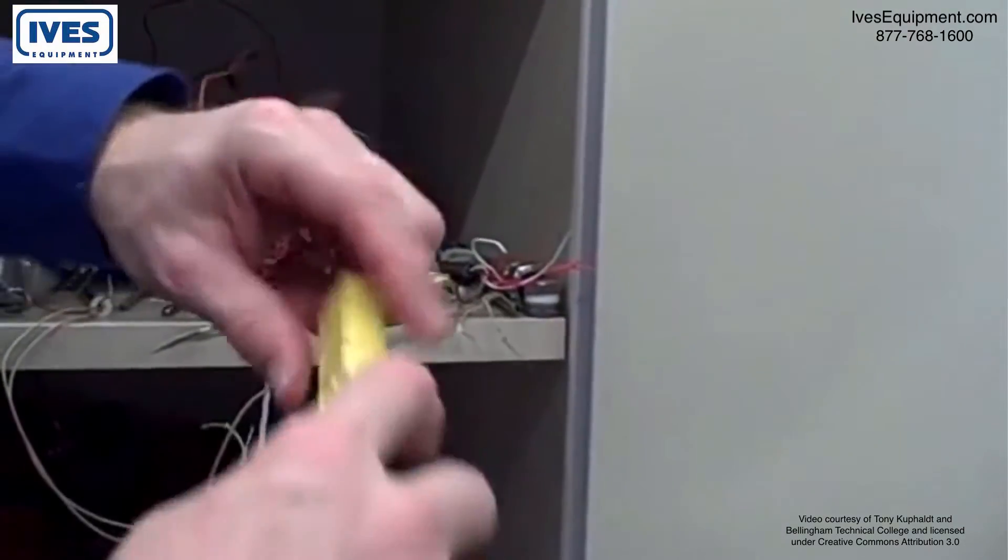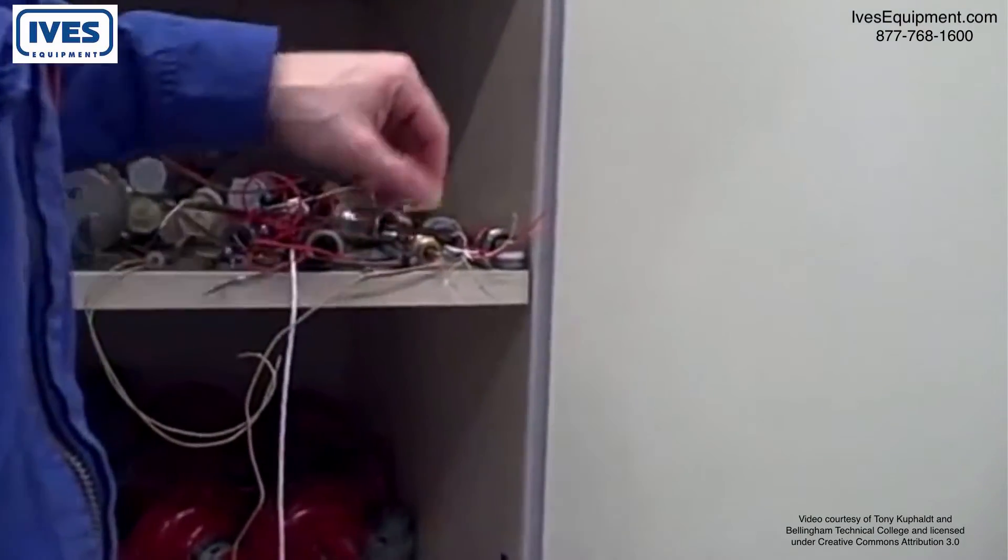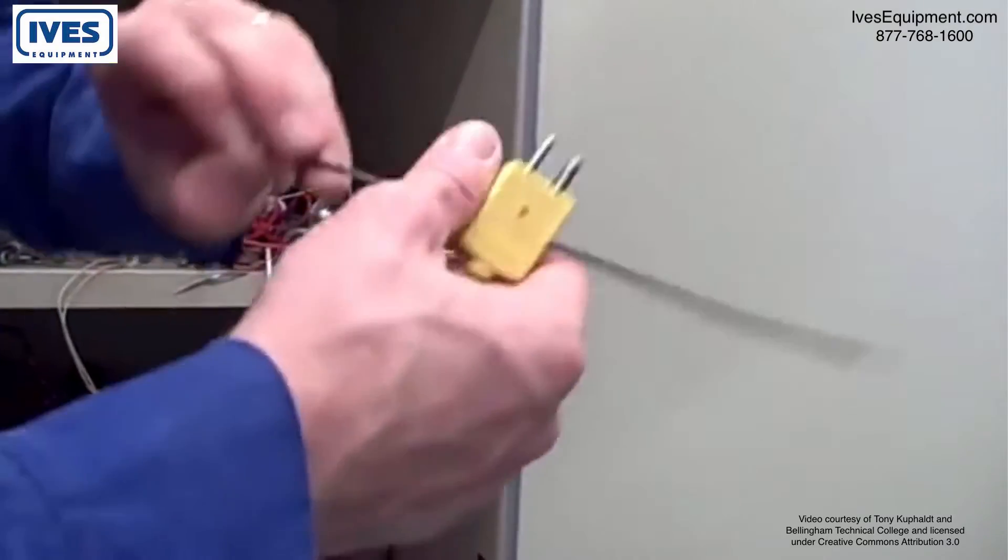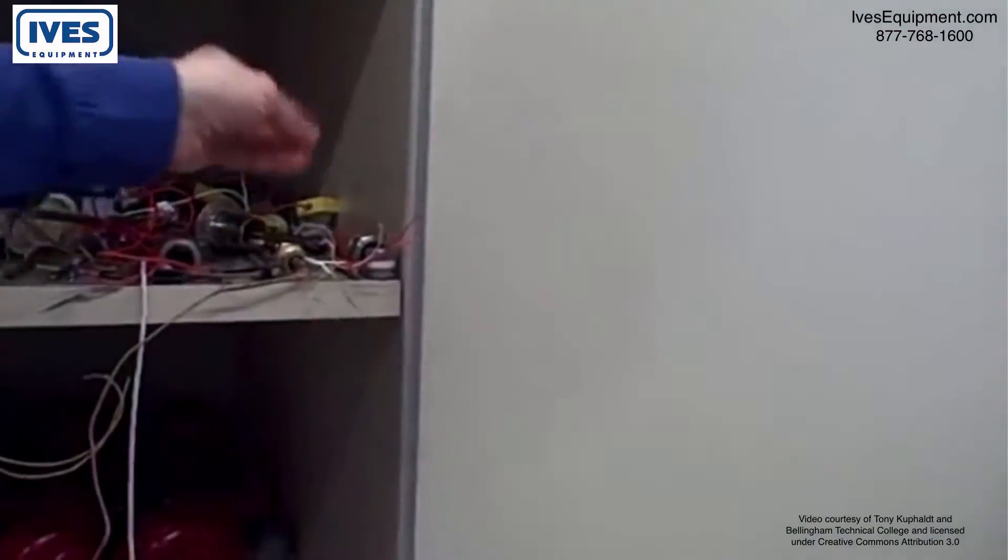So that's a type K with a pre-molded plug. And as I mentioned before, that thermocouple I was holding onto, that little piece of type J wire, is a homemade thermocouple. All we have to do is twist the ends together and voila, we have one.